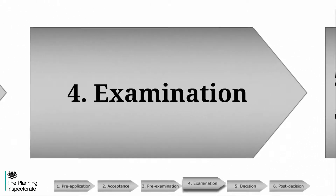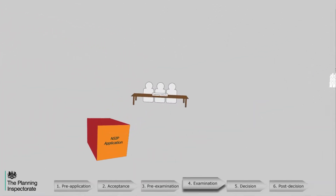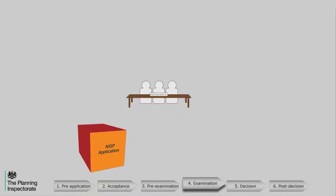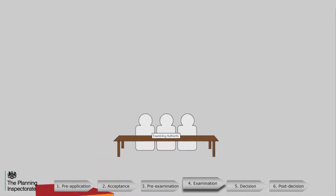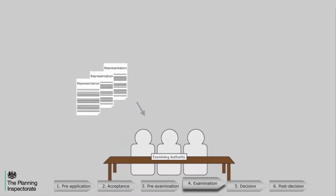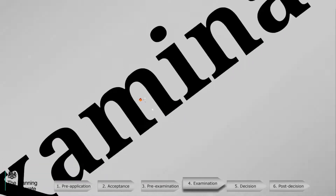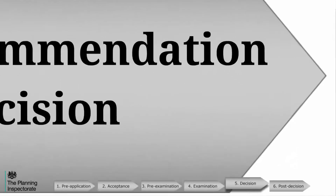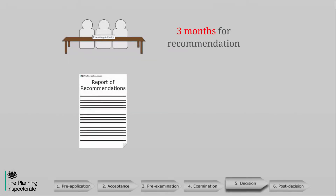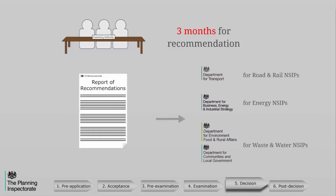The examination stage starts the day after the close of the preliminary meeting. It is at this stage that the examining authority examines the application, and the examination must be completed within six months. The examination is primarily conducted through written representations; however, hearings can also be held. These will normally be conducted in an inquisitorial manner. Each interested party is entitled to make oral representations about the application. During this stage, the examining authority has three months to write its recommendation and submit it to the relevant Secretary of State.